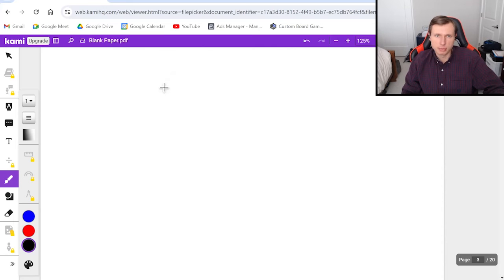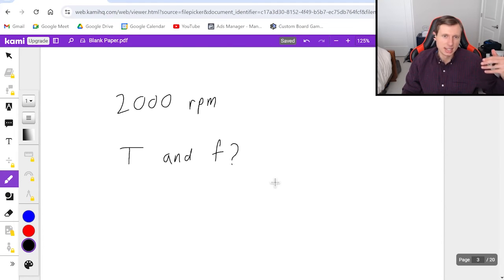A standard measurement for the tachometer is 2000 RPM, or in other words, 2000 rotations per minute. And my question for you is, I want you to find the period and the frequency for 2000 RPM. And if you think you can solve it without me, go ahead, pause the video, do it. If you need help, here's the solution.